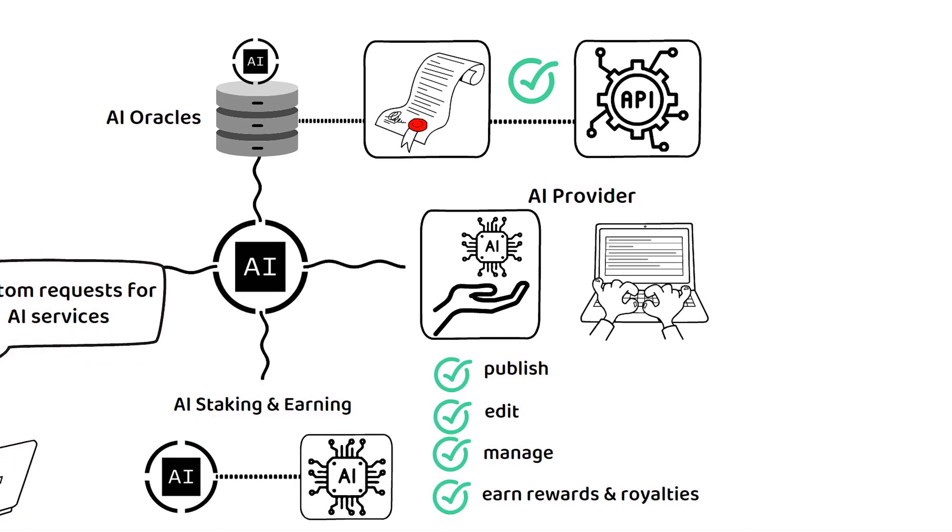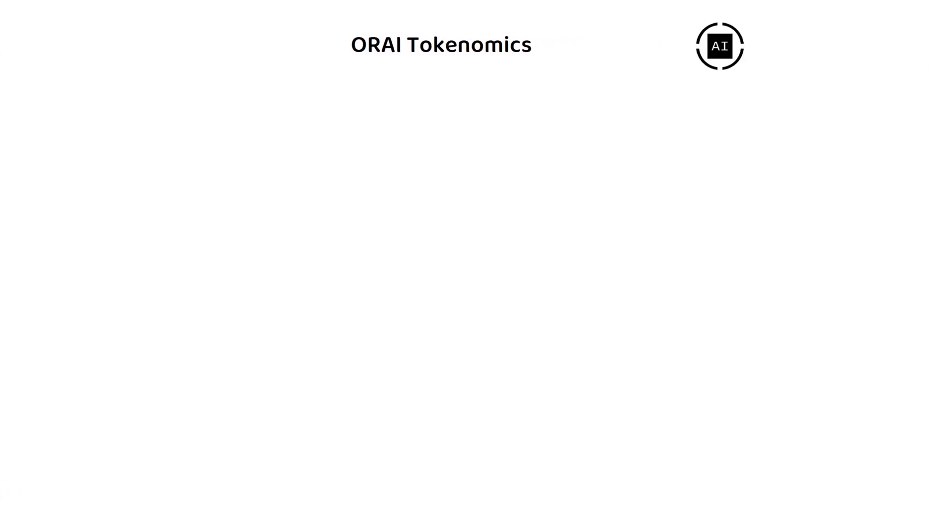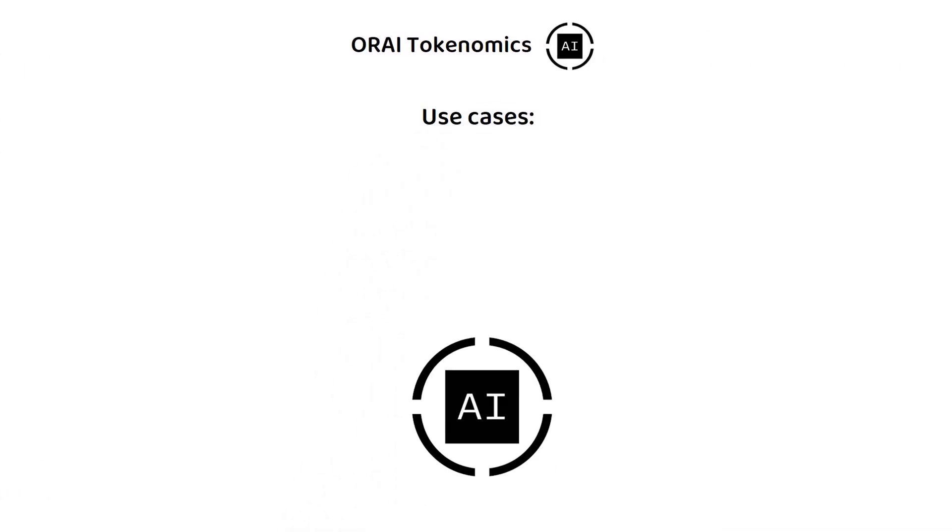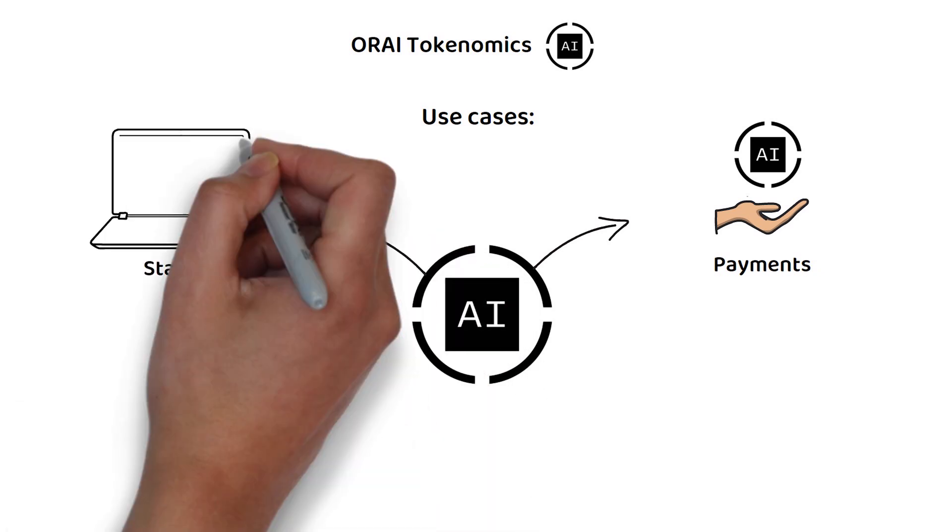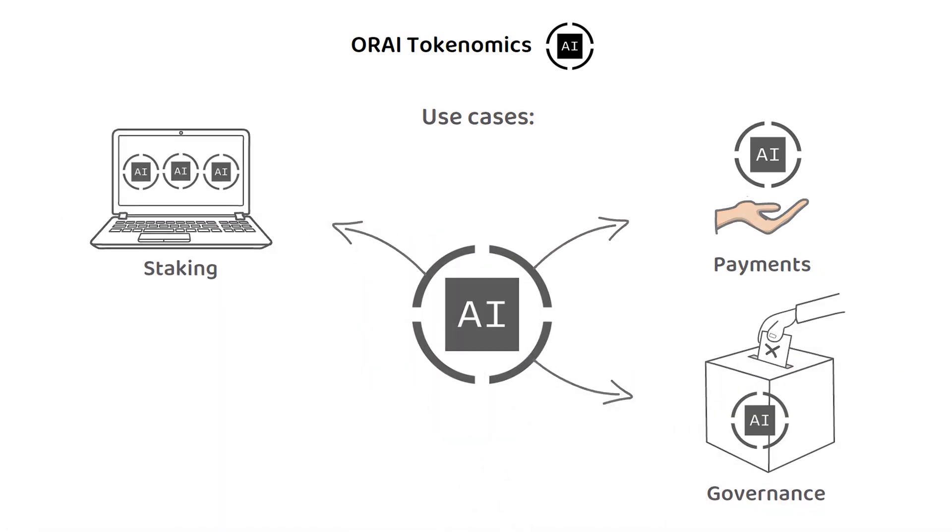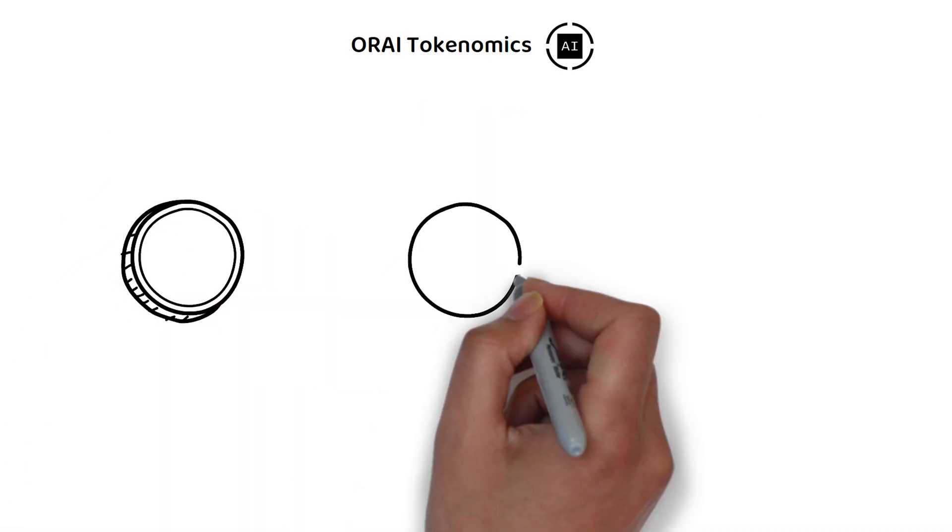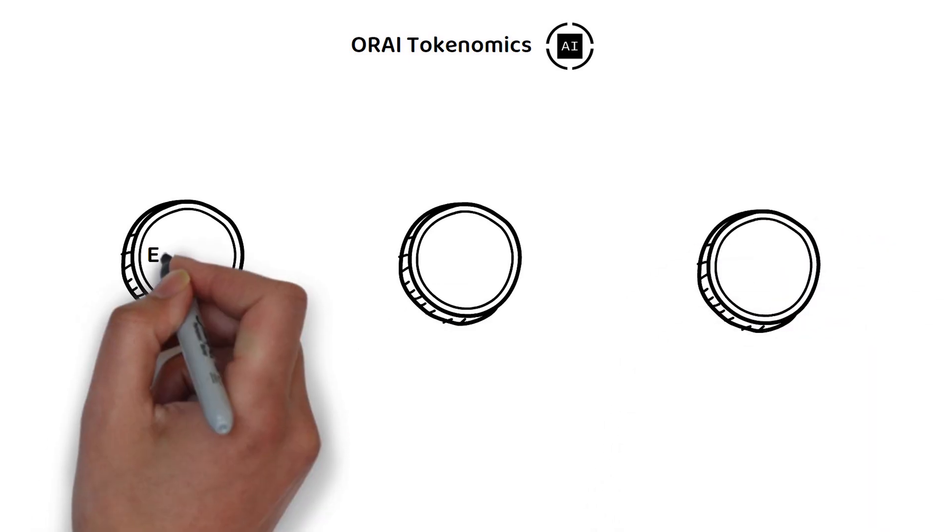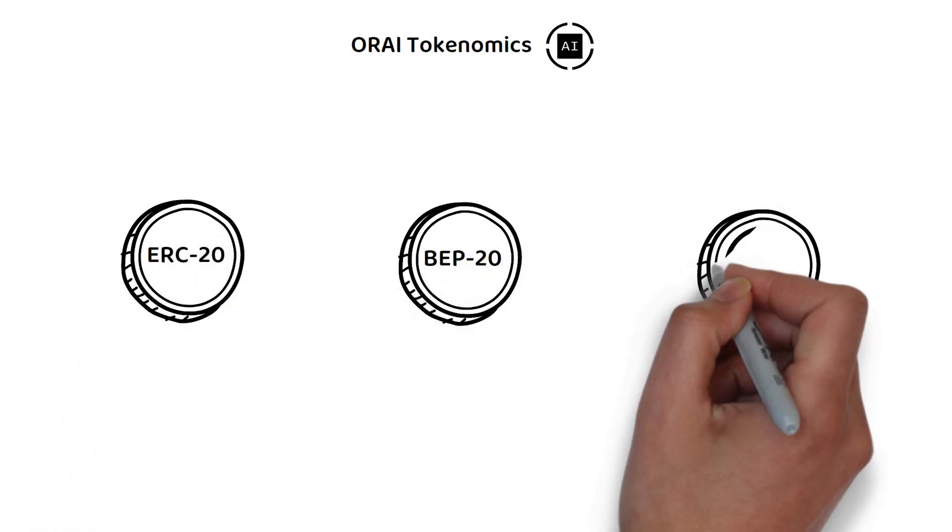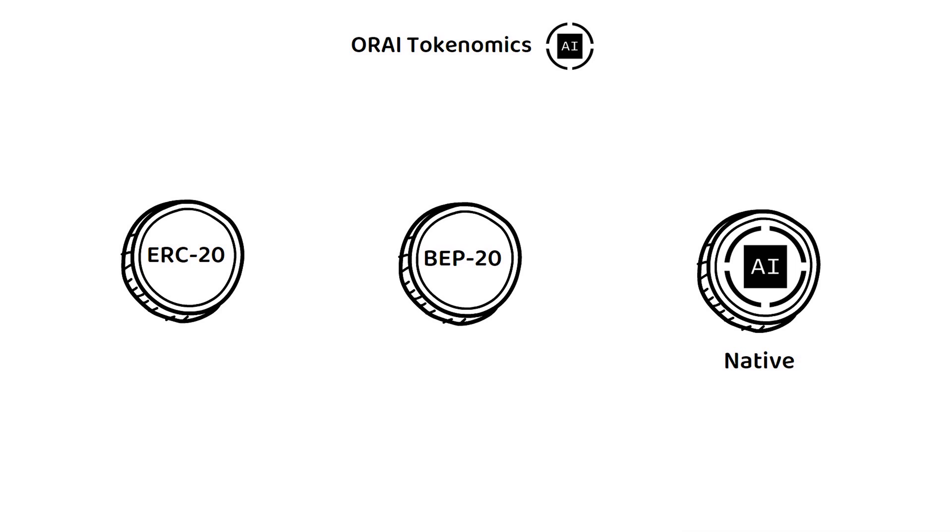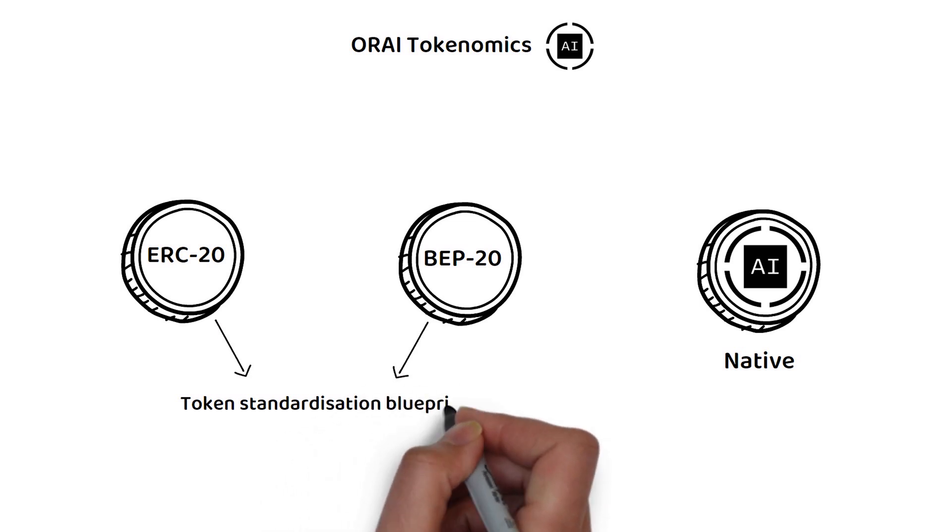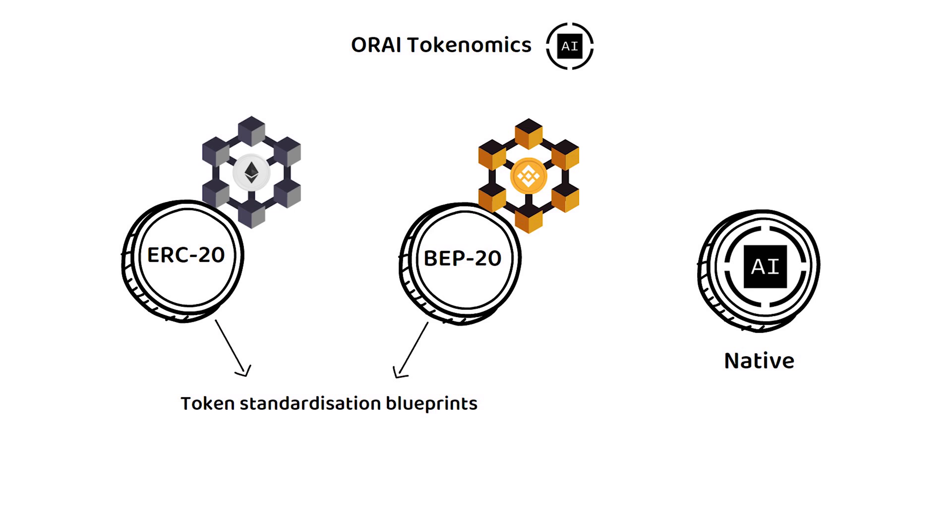But how about the tokenomics? The Orichain token can be used for all the proof-of-stake classics such as payments, staking and governance. At present, there are three types of ORI tokens, an ERC-20 version, a BEP-20 version, and a native ORI token on the ORI chain blockchain. The ERC-20 and BEP-20 are token standardization blueprints that ensure comparability with the native networks, in this case Ethereum and Binance respectively.